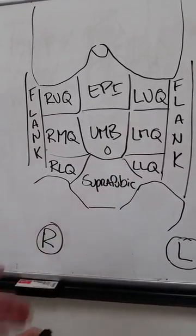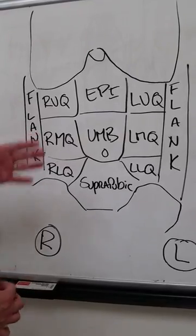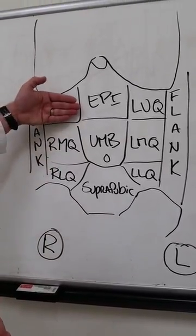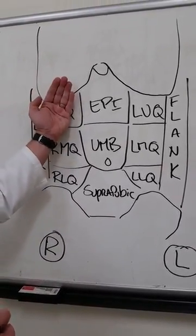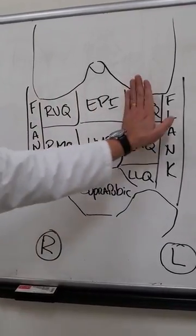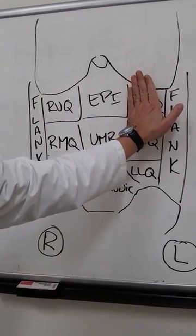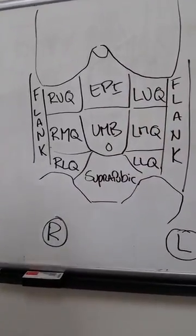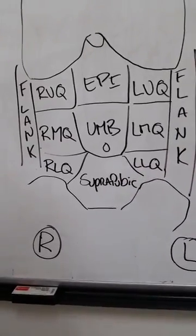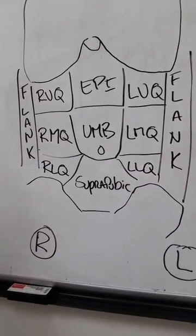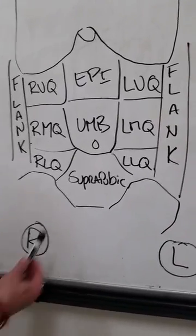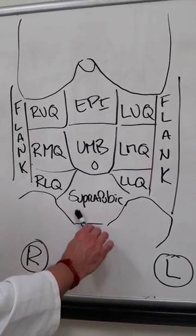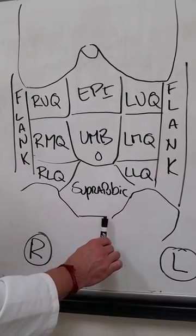For the kidneys, you would basically project into the posterior body — one kidney on the right hand side and one on the left. When looking at these anatomical structures, also remember that in a female patient you have the presence of the ovaries as well as the top of the uterus.